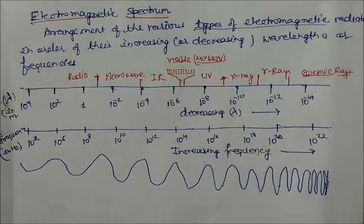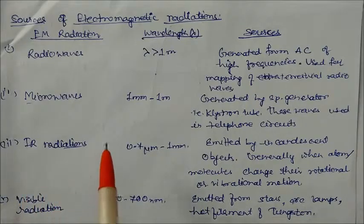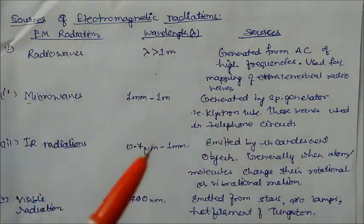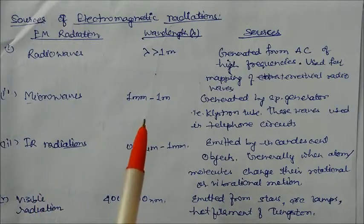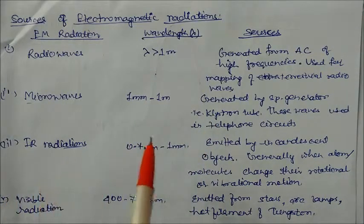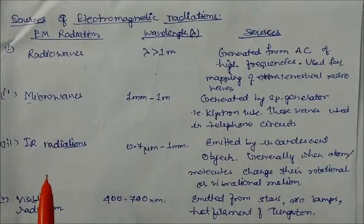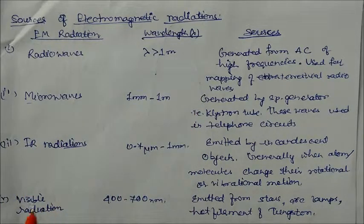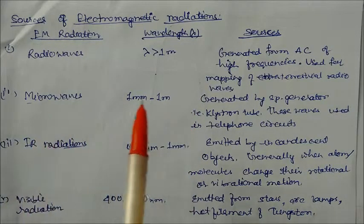Now, sources of electromagnetic radiation — which sources produce these waves. You will study more detail in physics, but here we will discuss only the theoretical part: the source and wavelength of each type of radiation.